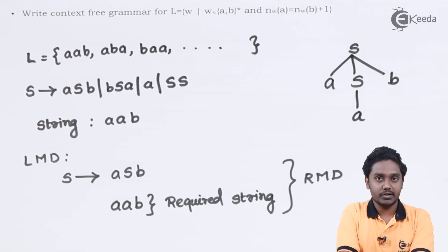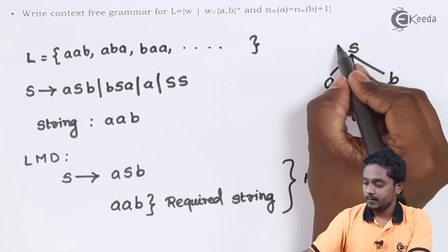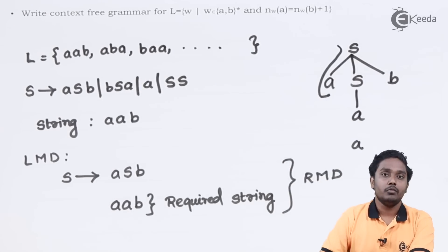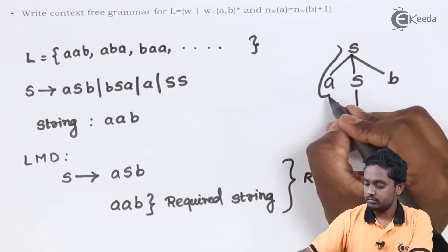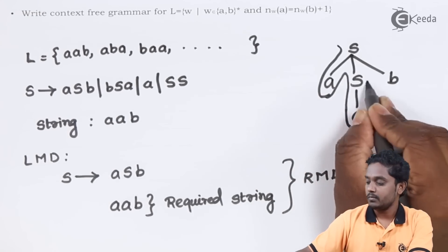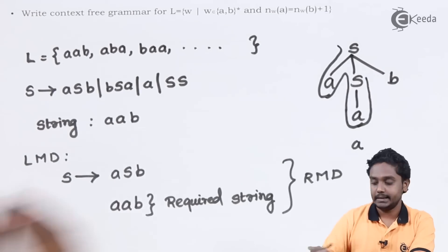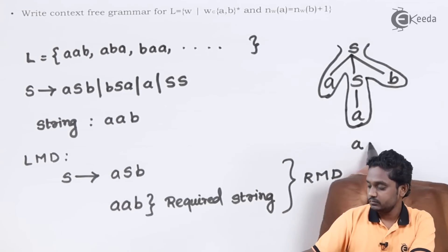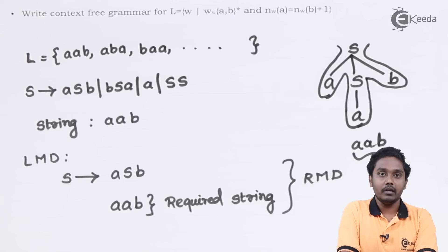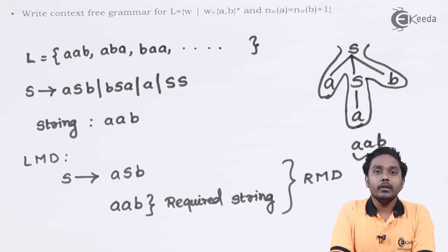You can see that the yield of this parse tree would be A followed by one more A followed by B, which is generating the expected string AAB, in which the number of A's is 2 and the number of B's is 1. That means the number of A's is exceeding the number of B's by 1.